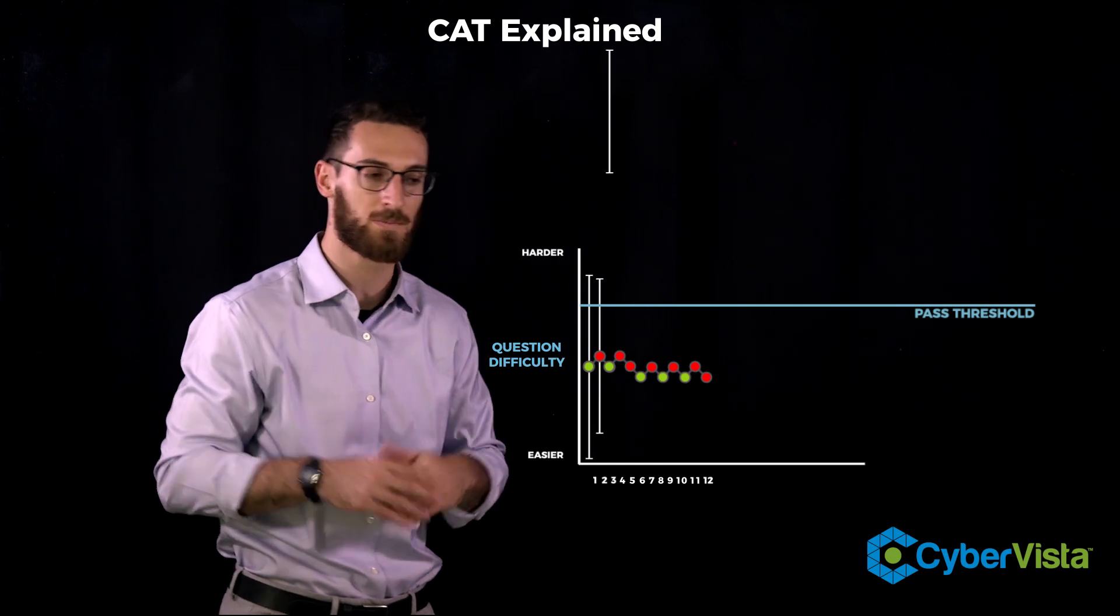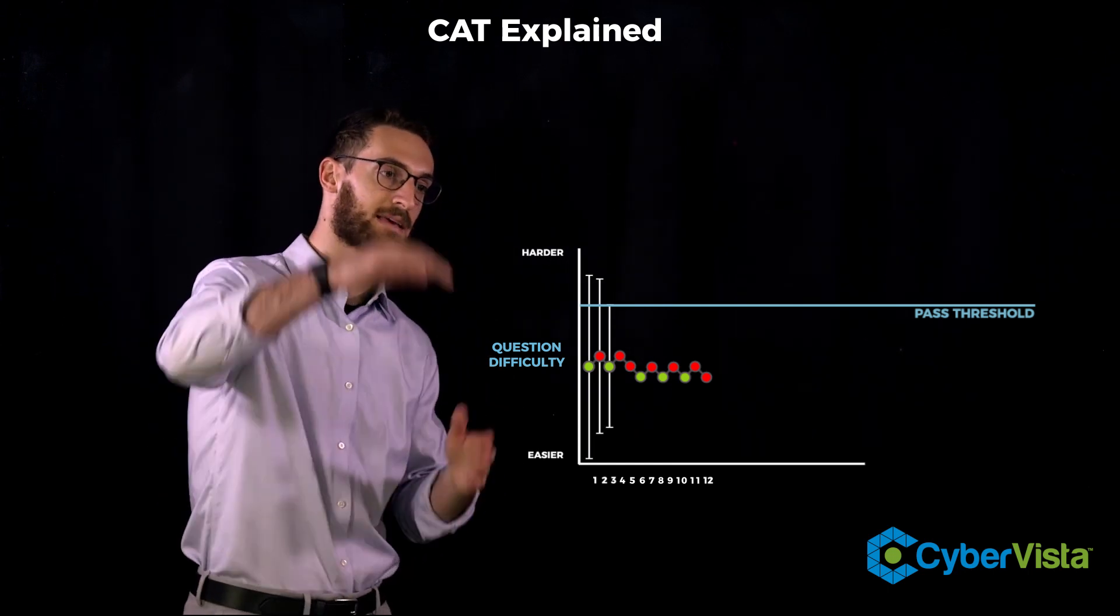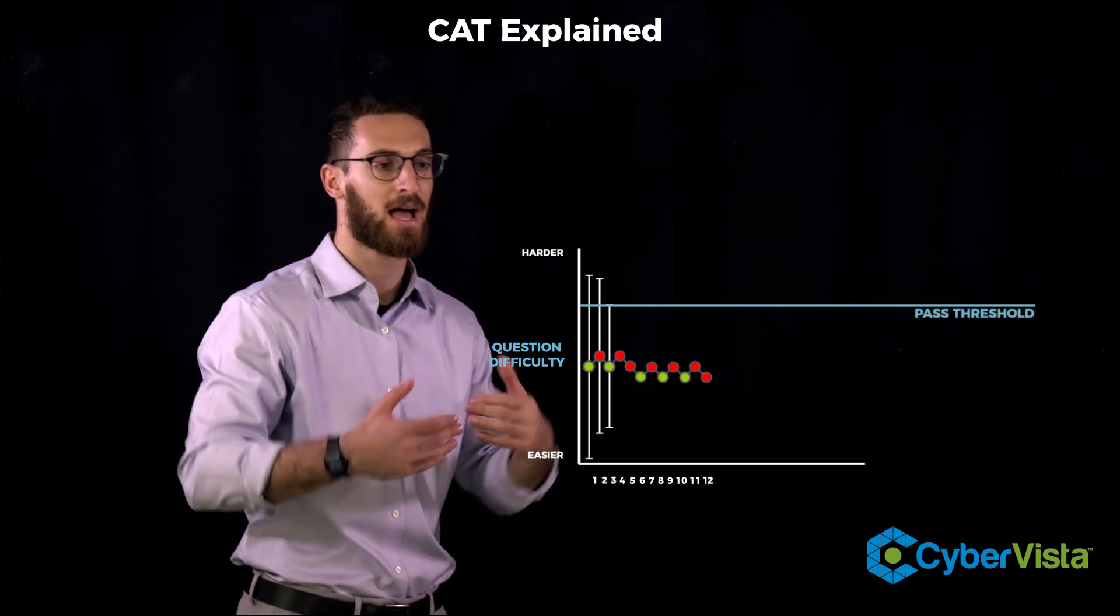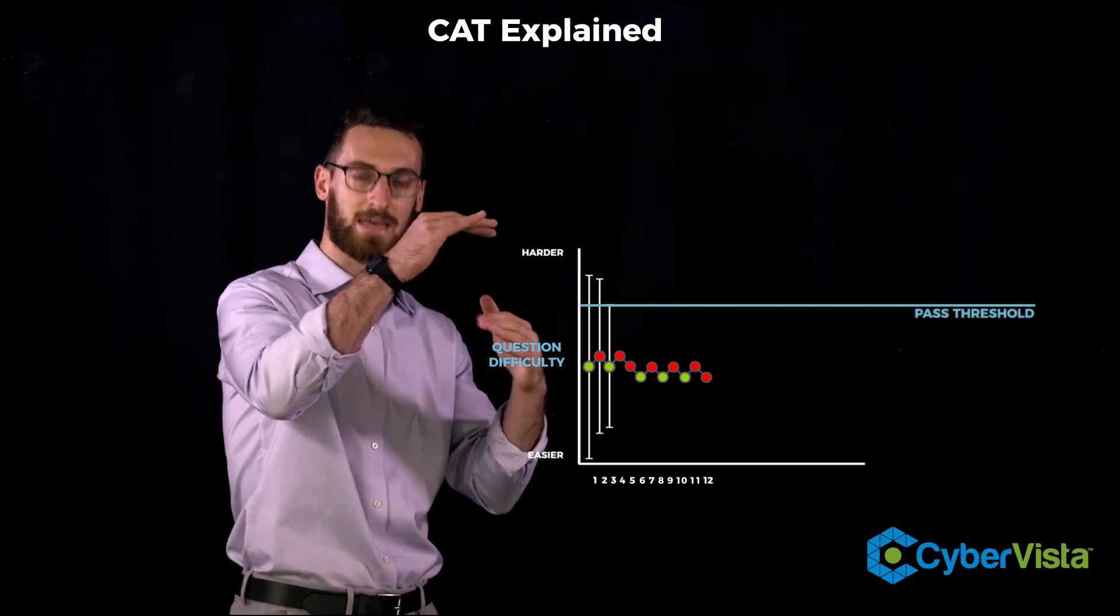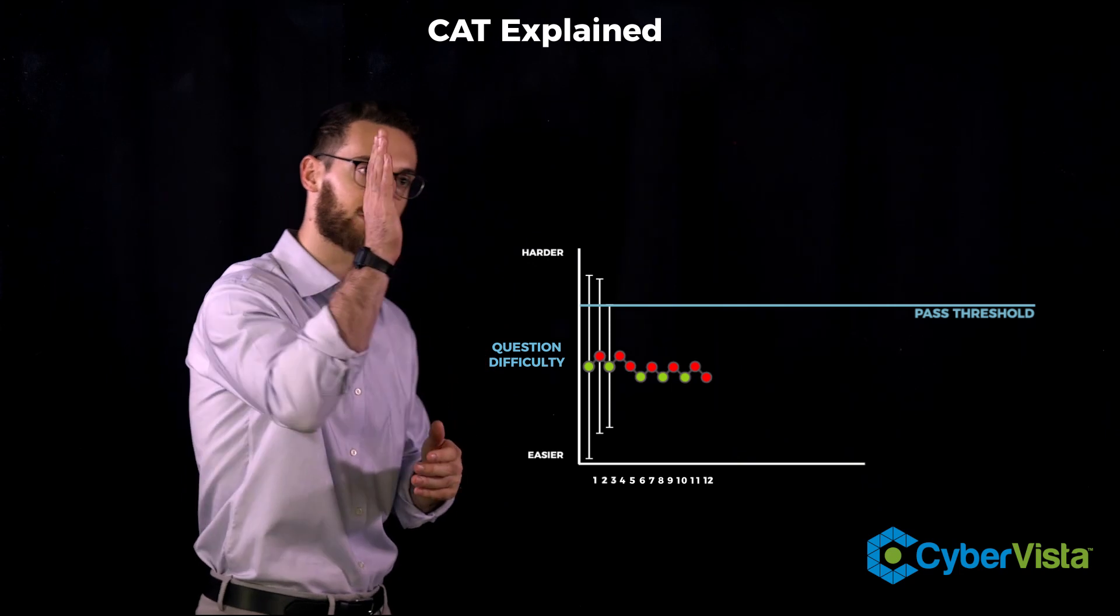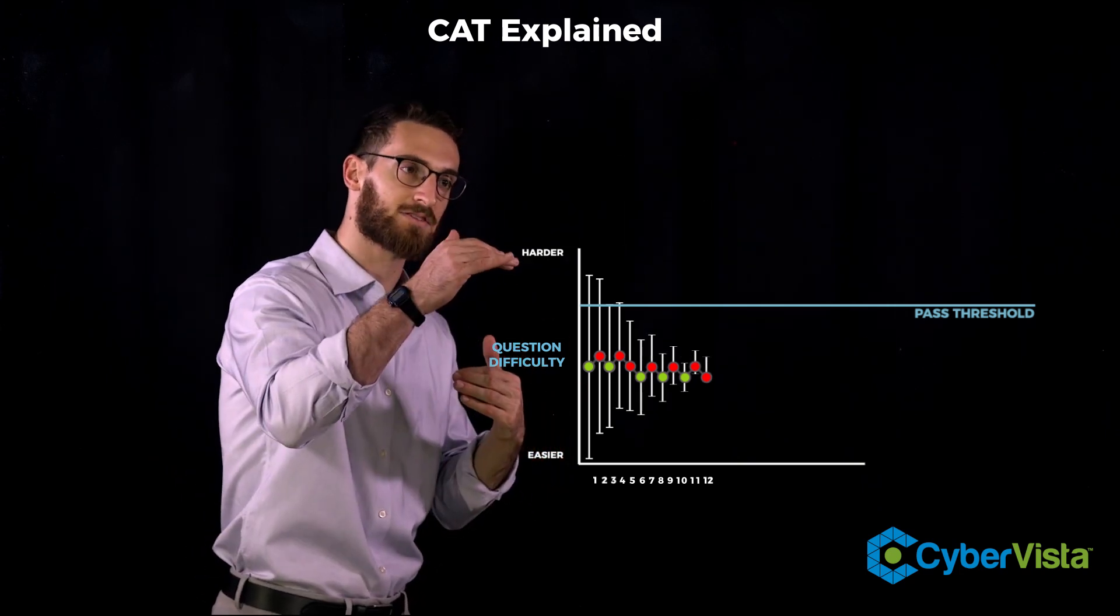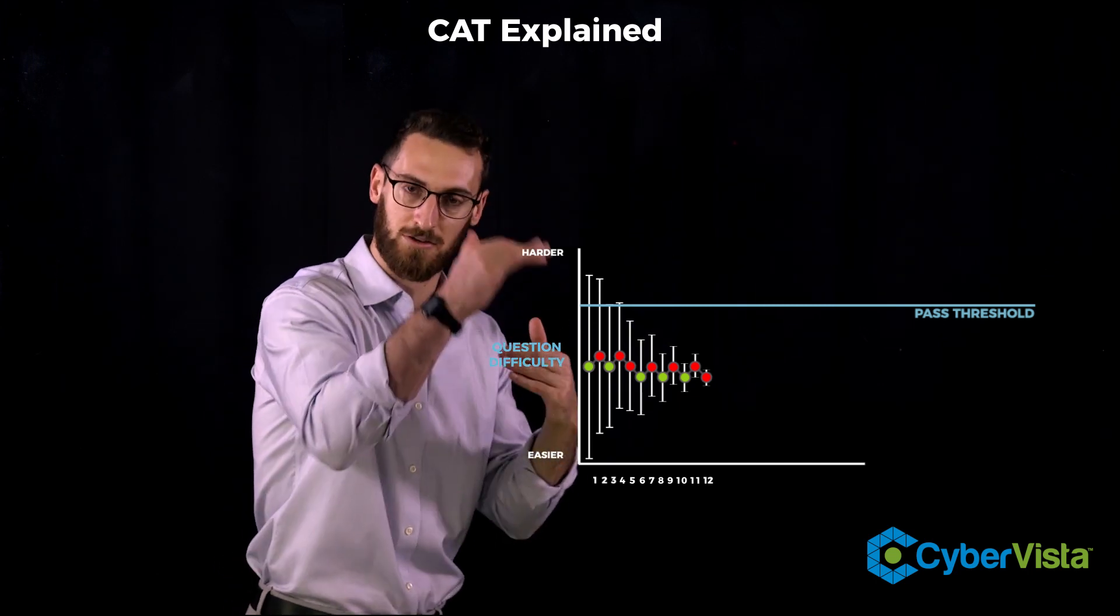So this basically is a mathematical range that the test engine is saying, okay, I think this test taker is within this range. Now watch what happens. When it gets more data, when you answer more questions, this range is going to get more and more narrow. It's going to shrink.